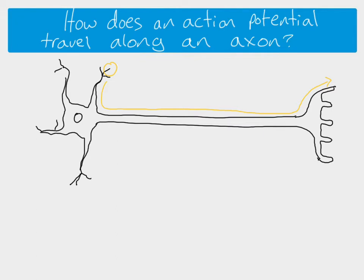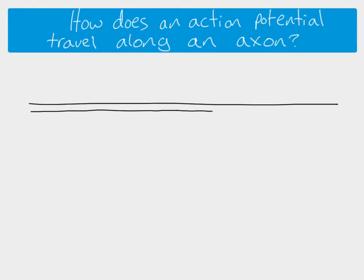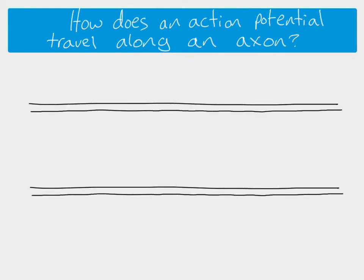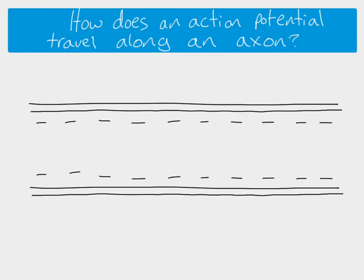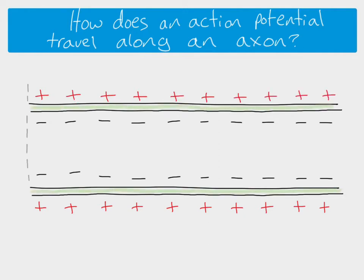We understand how an action potential happens in terms of the opening and closing of voltage-gated channels, but we want to know how it gets all the way down the axon. If we think about our axon here — the membrane on the outside — our normal resting potential means we have a more negative interior and a more positive exterior, approximately minus 70 millivolts.